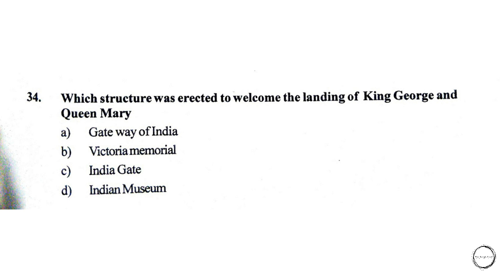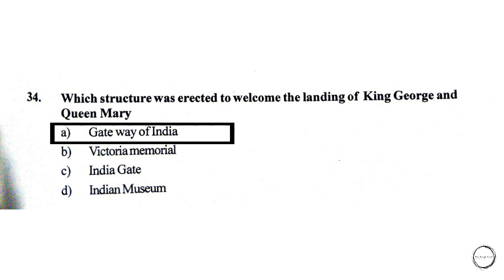Moving on, which structure was erected to welcome the landing of King George and Queen Mary? Options are: A) Gateway of India, B) Victoria Memorial, C) India Gate, D) Indian Museum. The right answer is option A, Gateway of India.